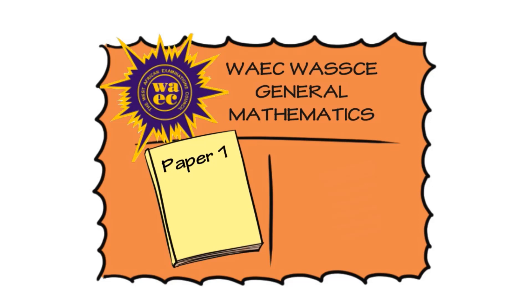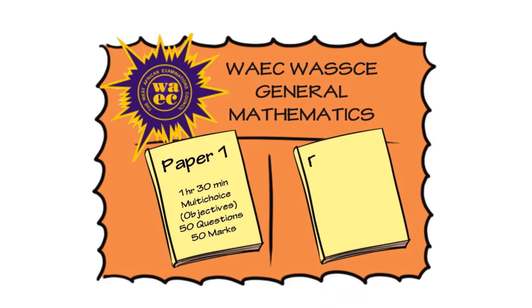First, the examination scheme. What modality is this exam going to take? There are going to be two papers, paper one and paper two. The first paper is going to take a total of one hour 30 minutes. They are going to be presented with 50 objective questions. They are multiple choice questions, and they are going to take 50 marks.